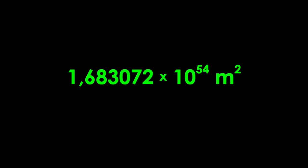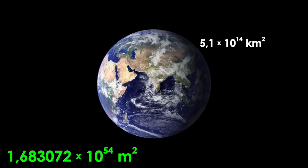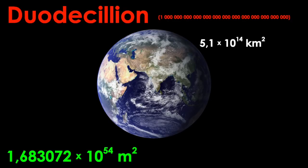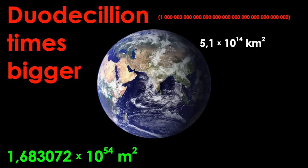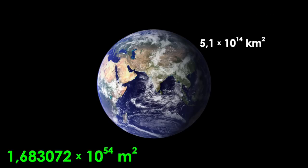For perspective, the surface area of the earth is around 510 trillion square kilometers. If we were to put the earth and all of Growtopia next to each other, Growtopia would be one duodecillion times bigger than the earth. It would look like this.